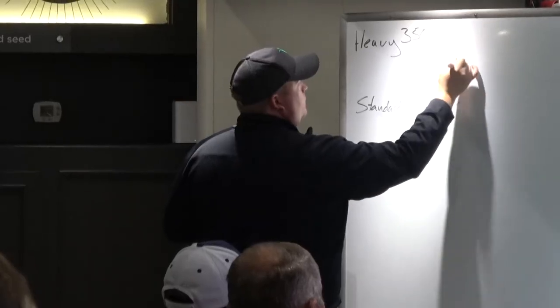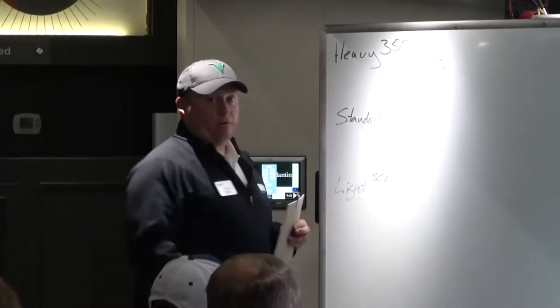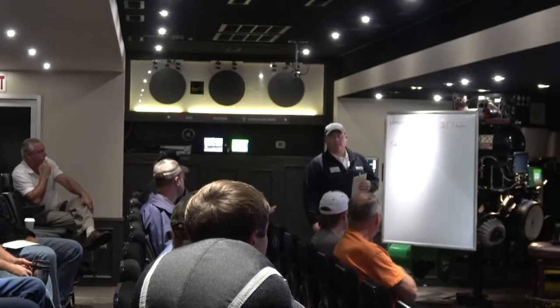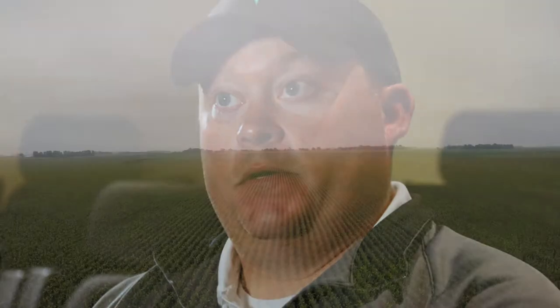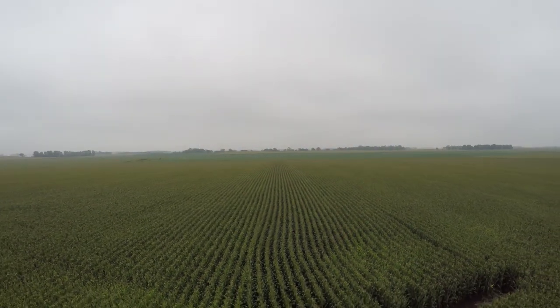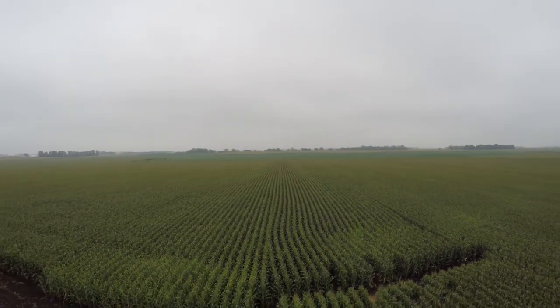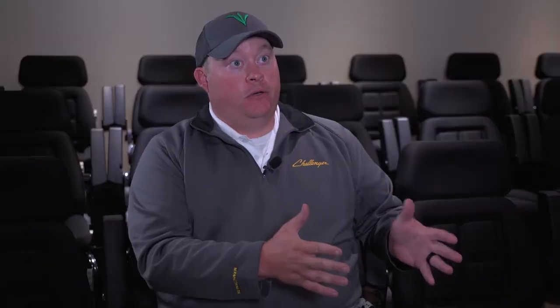The biggest difference we're finding this year in overall production is in downforce control along with depth control. The downforce is showing a huge differentiation in yield and bushels produced. Here in this plot in New Ulm, Minnesota, we're seeing a 40-bushel difference from automatic downforce control to a light downforce setting.